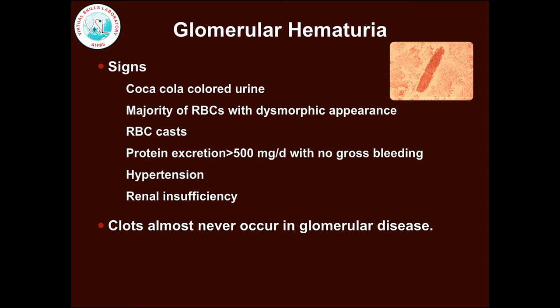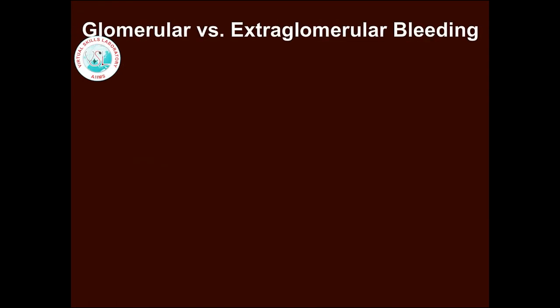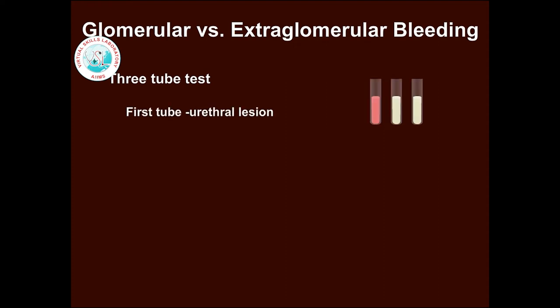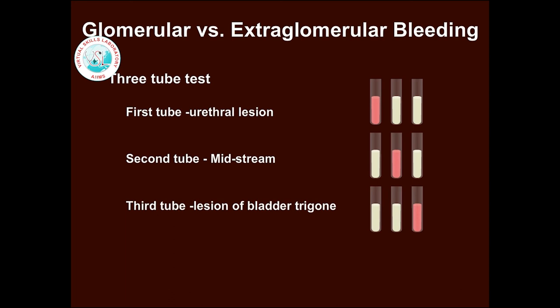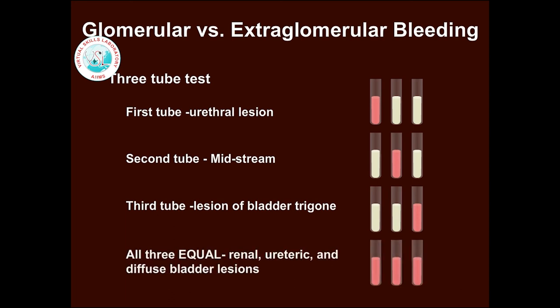If you suspect glomerular hematuria, refer the patient to a nephrologist. A three-tube test may sometimes be useful: more bleeding in the first tube indicates a urethral lesion, the second tube suggests a midstream lesion, and the third tube suggests a lesion of the bladder trigone. If all three show equal amounts, renal, ureteric, and diffuse bladder lesions may be implicated.